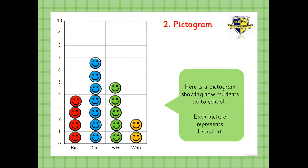I'll go over it with you. Children who walk to school — there are two happy faces. Children who go by bike in the green color — one, two, three, four, five. You can count them, or get your ruler and go to the top of the green, the last one at the top, go to the left and see which number it marks. That last green one — number five.